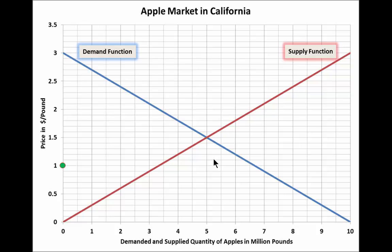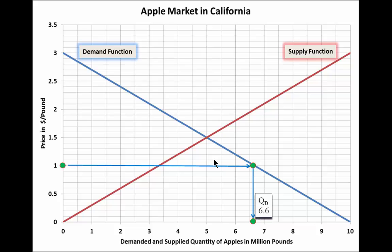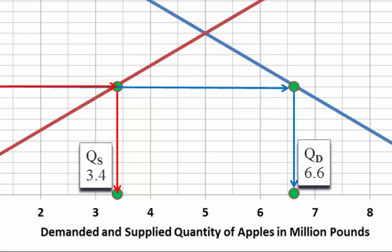We start at the price axis and try finding quantity demanded. We ignore the red curve because we are not analyzing supply. We move horizontally to the blue demand curve, keeping price at $1, and move vertically down, maintaining quantity demanded. Quantity demanded is now 6.6 when the price is $1. To find supplied quantity for a price of $1, we start again at the price axis, move horizontally to the red supply curve and vertically down to find a quantity supplied of 3.4 for a price of $1. Consequently, we are facing excess demand of 3.2 when the price is $1.